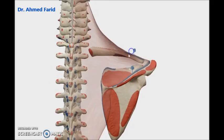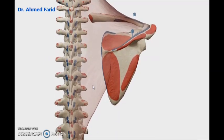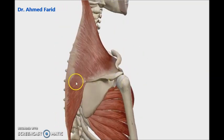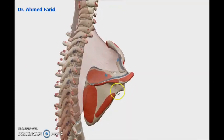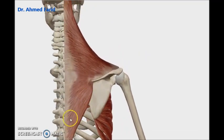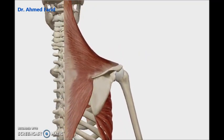Regarding the lower fibers of trapezius, if you look at the direction of the fibers and they contract, they will pull the scapula down. So the second action of trapezius is formed by the lower fibers, and the action is scapular depression. This is very clear in this animation — scapular depression by the lower fibers of trapezius.